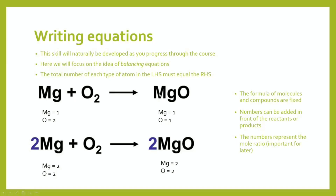Introduction to moles. You're already aware that when writing an equation, for example, magnesium plus oxygen gives us magnesium oxide. Normally, our equation is not balanced. But when we balance the equation by putting a two in front of the magnesium on the left-hand side and a two in front of the magnesium oxide on the right-hand side, our equation is balanced.